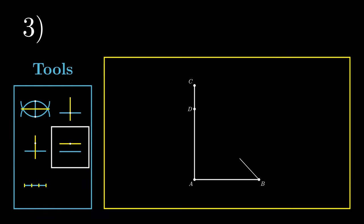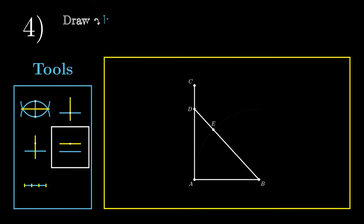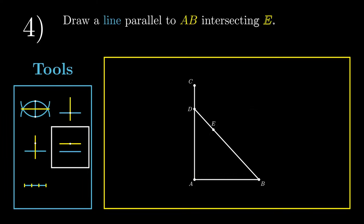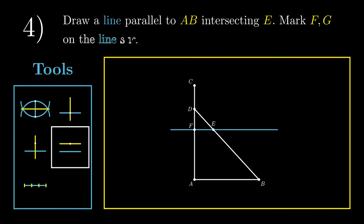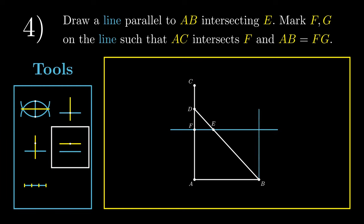For step 3, we're going to mark point E on BD such that AB equals BE. For step 4, we're going to draw a line parallel to AB that intersects point E. We need to mark F and G on the line such that AC intersects F, and AB equals FG. To ensure that AB equals FG, we're going to draw a line parallel to AC passing through point B. This point of intersection is G. At this point, we no longer need the line segment EF, and we're going to erase that.